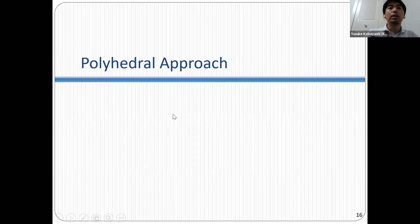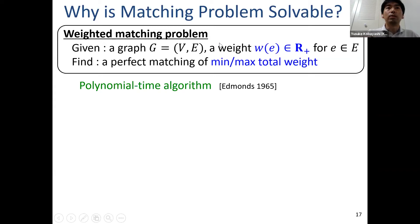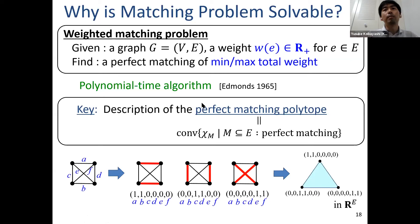Let me discuss the polyhedral approach, which is used for many combinatorial optimization problems, particularly matching problems. The starting point is the weighted matching problem. The key reason it is solvable in polynomial time is that we know the description of the perfect matching polytope — the convex hull of characteristic vectors of all perfect matchings. For example, a graph with three perfect matchings gives three zero-one vectors whose convex combinations form the polytope.